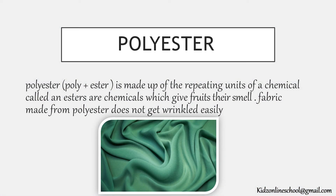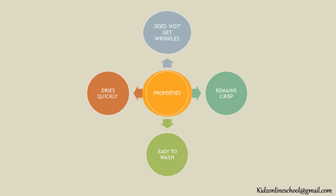Polyester: Polyester is made up of repeating units of a chemical called an ester. Esters are chemicals which give fruits their smell. Fabric made from polyester does not get wrinkled easily. Properties: Does not get wrinkled, dries quickly, easy to wash, remains crisp.